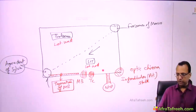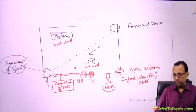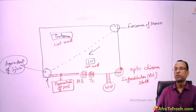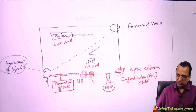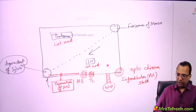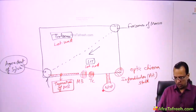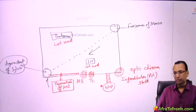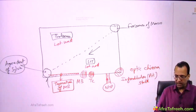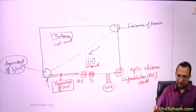The structures at the floor of the third ventricle from anterior to posterior are: most anterior is the optic chiasma, behind that is the infundibular or pituitary stalk with the neurohypophysis, then the tuber cinereum part of the hypothalamus, behind that the mammillary body, and behind that the tegmentum part of the midbrain.